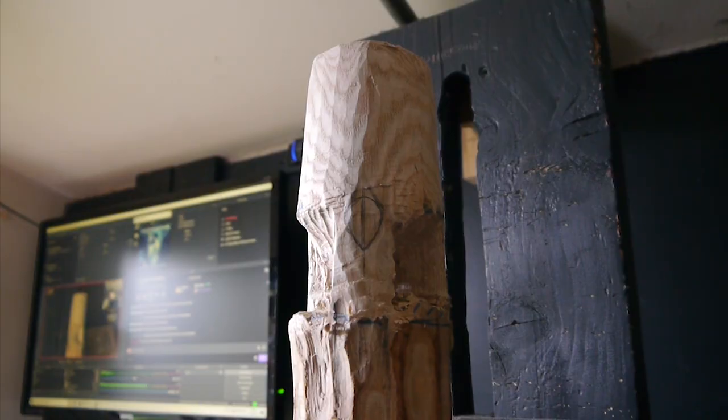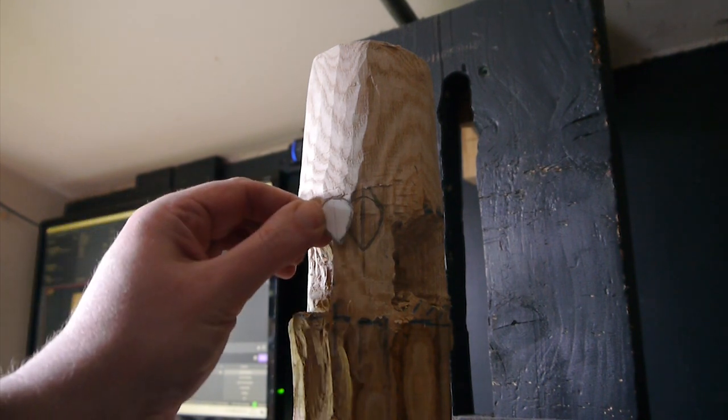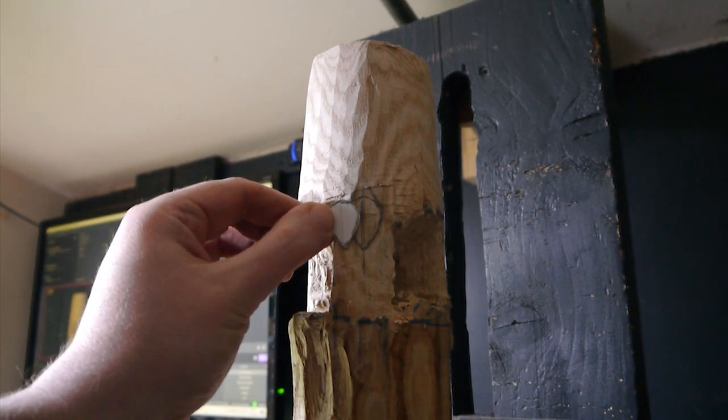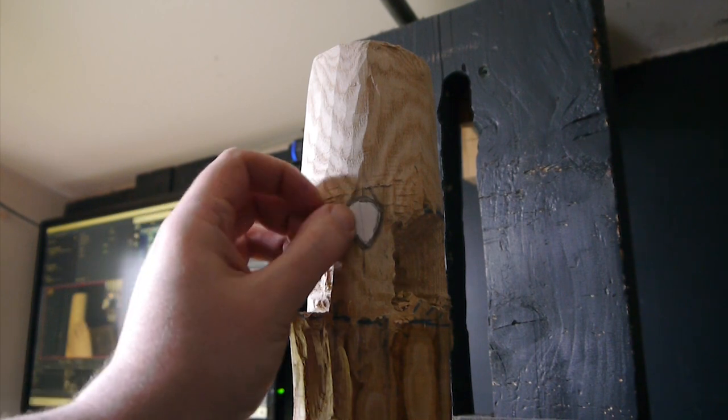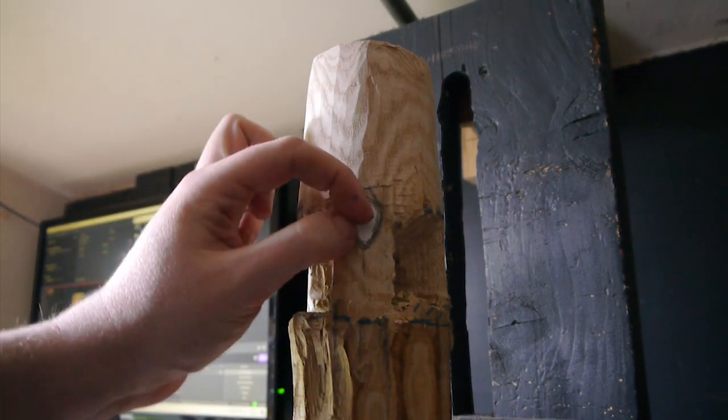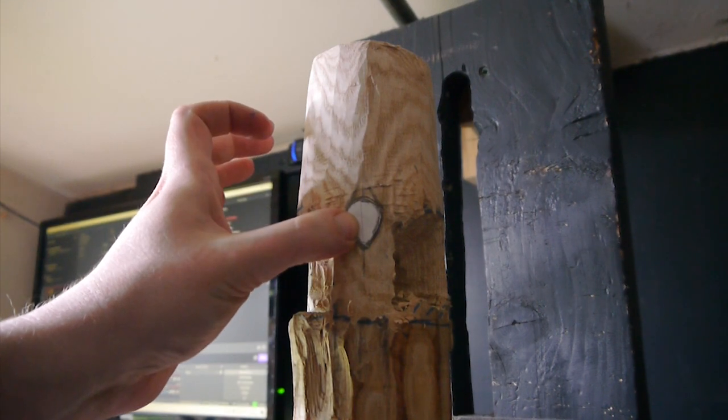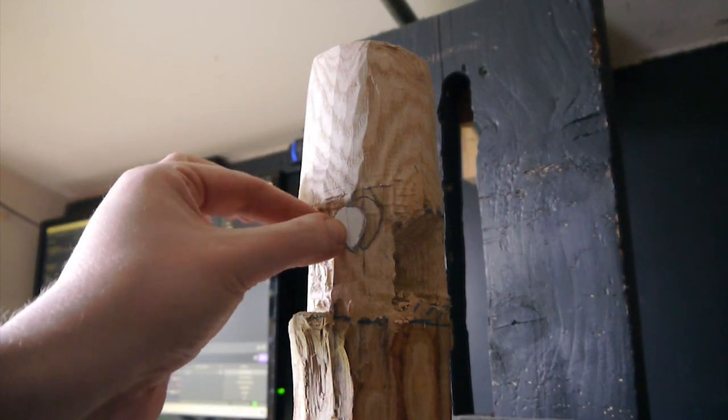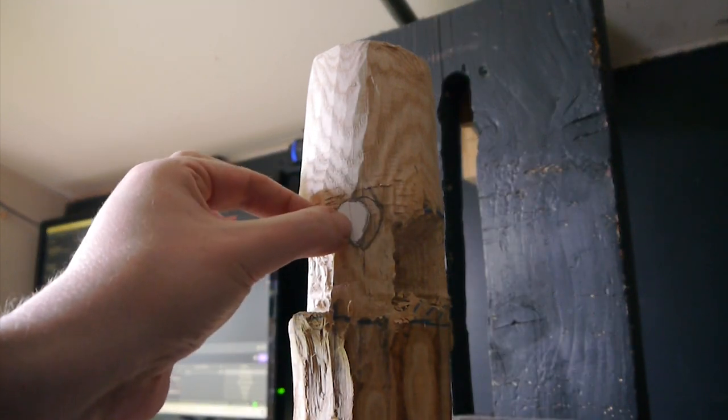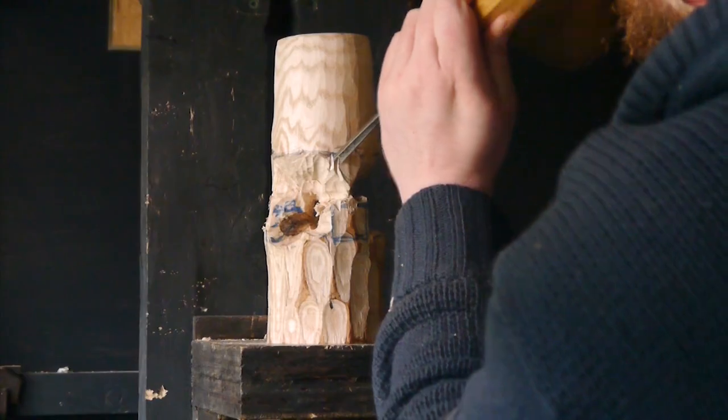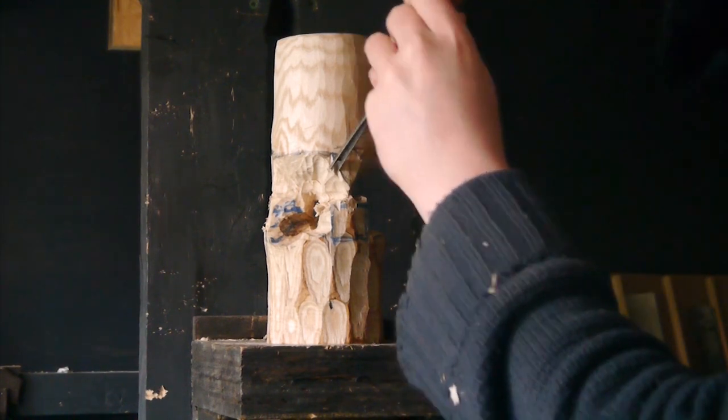We're going to try and make these little teardrop shape feet. I made this little template so we can copy this on every leg. Then we'll outline those, clean up the bottom a bit, then we'll remove it from the base and start carving with some knives and small chisels.